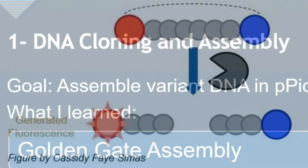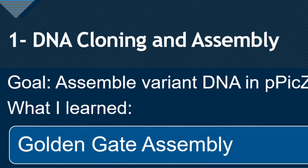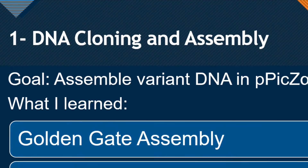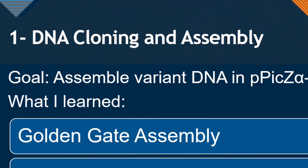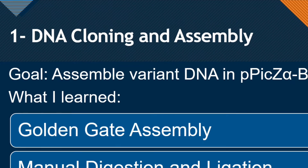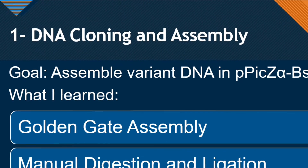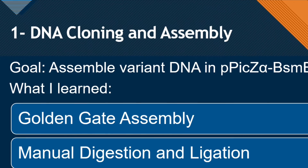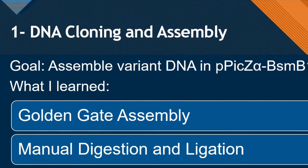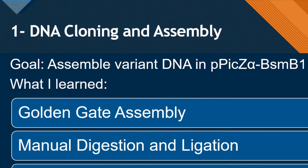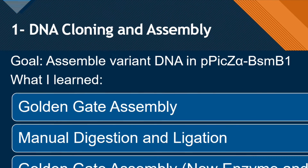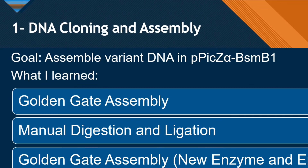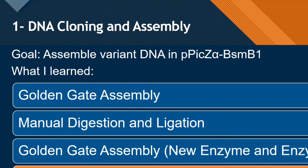During this process, we encountered several problems with DNA assembly and cloning, which was the first step, and it took us most of the summer to figure out how to successfully assemble the DNA. However, I ended up learning a lot about different ways to assemble DNA, including Golden Gate, Manual Digestion and Ligation, and Gibson assembly.